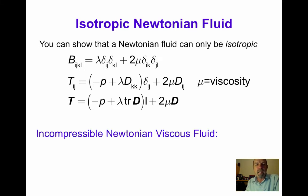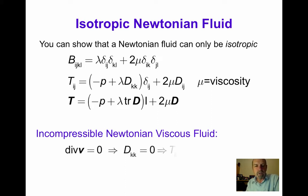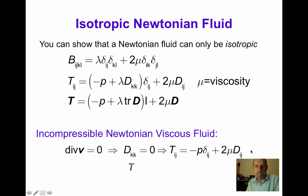For an incompressible Newtonian viscous fluid, this further simplifies by making use of the fact that div v, or D_kk, equals zero. This term disappears, and we're left with T_ij equals minus p δ_ij plus 2μ D_ij, or in direct notation, T equals minus p times I plus 2μ times D.